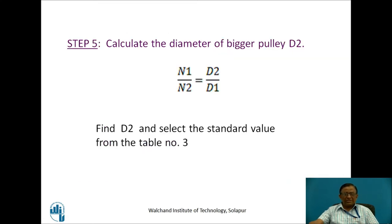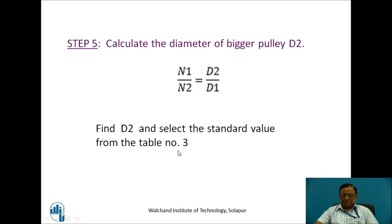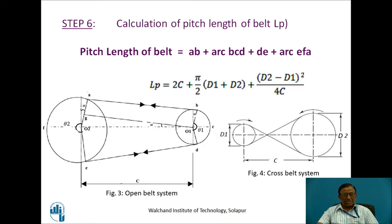After getting diameter D1, I go for D2, which is the bigger pulley diameter. For this, I use the speed ratio or velocity ratio equation shown here. Based upon this, I calculate D2. Once again, my job is to select the standard value of D2 from the table. This is how I fix diameters D1 and D2 as a standard selection from manufacturer's data.